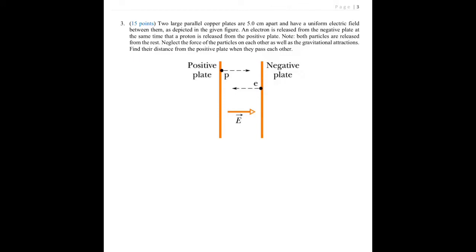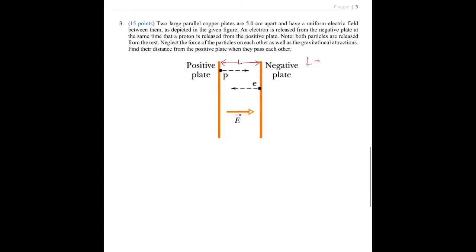Let's tackle problem number three in the practice test. We have two parallel copper plates with a separation L. L is given as five centimeters, or 0.05 meters. The plate on the right is negatively charged and the plate on the left is positively charged. We're going to release two particles: one near the positive plate and one near the negative plate. From the positive side, we release a proton from rest.